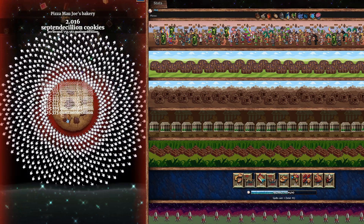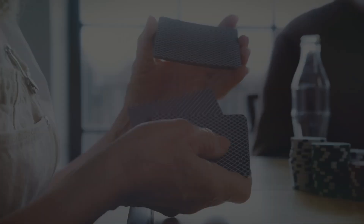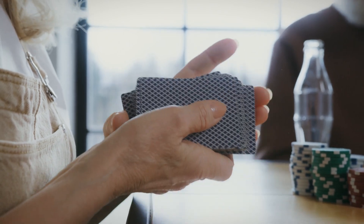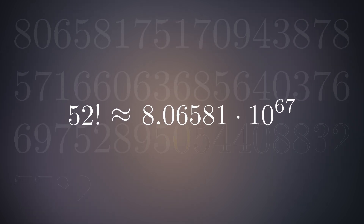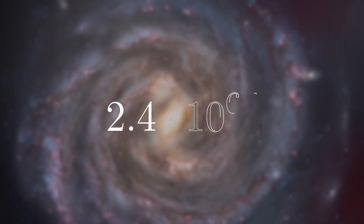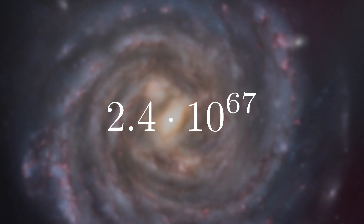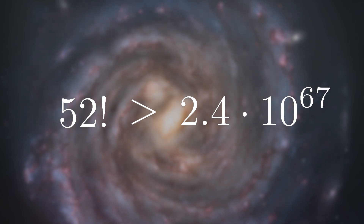For example, I have two septendecillion cookies in Cookie Clicker — that's a two with 54 zeros. A humble deck of cards is also a source of a very large number. There are only 52 cards in a deck, but how many ways can we shuffle them? Well, 52 factorial — 52 times 51 times 50 times 49, and so on. This is roughly equal to 8 times 10 to the 67, or 8 with 67 zeros. It is estimated that the Milky Way contains roughly 2.4 times 10 to the 67 atoms, meaning there are more ways to shuffle a deck of cards than there are atoms in the entire galaxy.